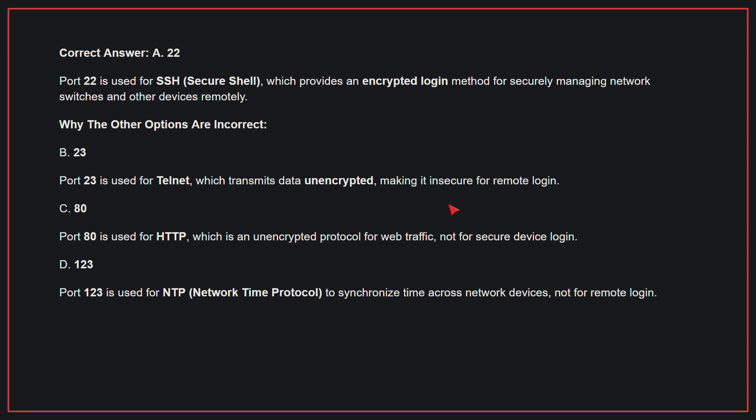Why the other options are incorrect? B, 23: Port 23 is used for Telnet, which transmits data unencrypted, making it insecure for remote login. C, 80: Port 80 is used for HTTP, which is an unencrypted protocol for web traffic, not for secure device login. D, 123: Port 123 is used for NTP to synchronize time across network devices, not for remote login. Therefore, the correct answer is A, 22.